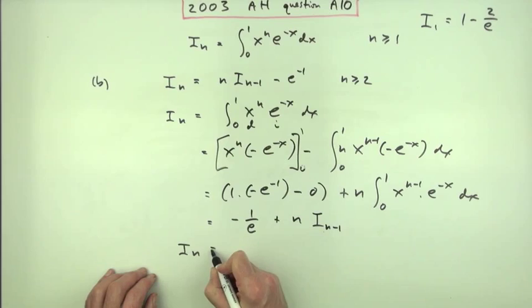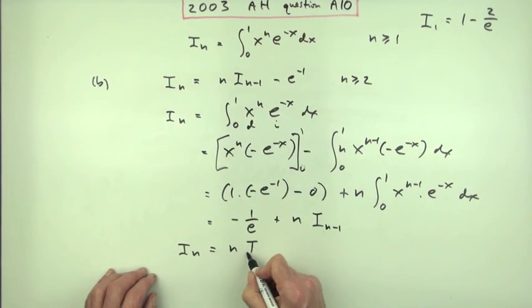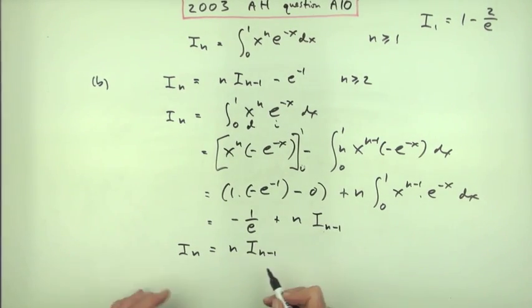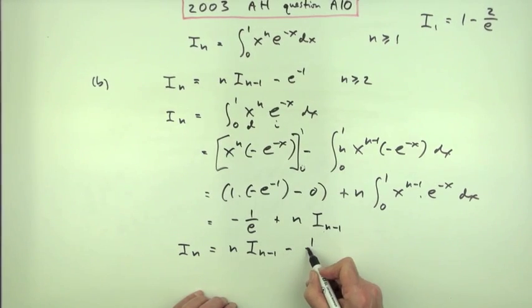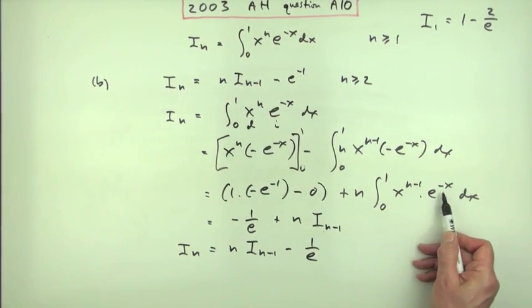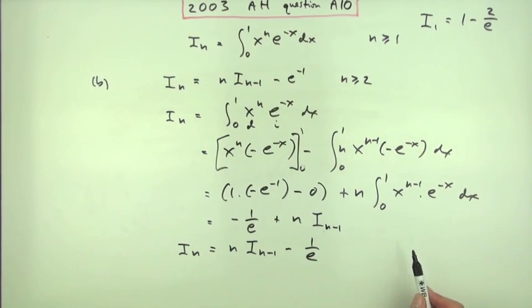Which means that i to the n is n lots of i to the, not to the, i_(n-1) minus 1 over e, I'll put it, preferring that form. Yes, you would put it into that index form for integrations if you wanted.